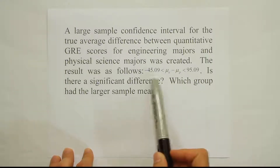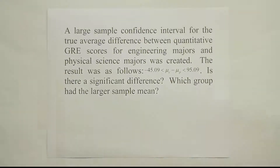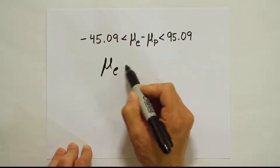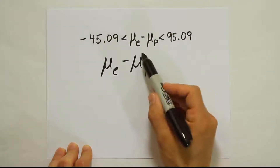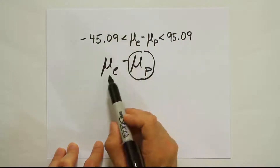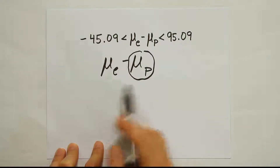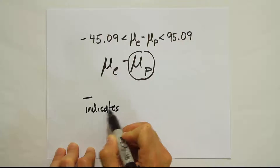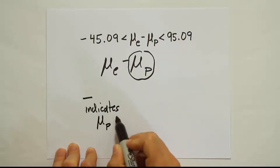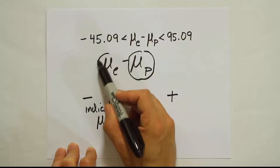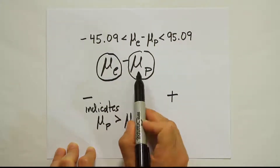However, we can still answer which group had the larger sample mean just by looking at the interval. We have minus 45.09 to 95.09, and the subtraction was mean for engineers minus mean for physical science majors. If the physical science mean was bigger, subtracting would give a negative answer. So a negative interval indicates that the mean for physical science majors is greater than the mean for engineers. The opposite is true if the interval is more positive — a positive interval means the mean for engineers was bigger.